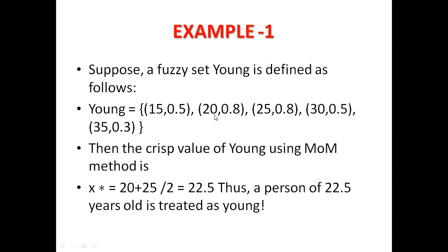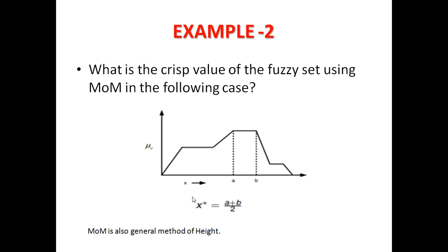With one peak point having value 20 and another having value 25, we apply the formula: 20 plus 25 divided by 2, giving 22.5. This result, 22.5, will be treated as the crisp value — representing the youngest person in that group. So we are getting the crisp value from this fuzzy set using the MOM method.